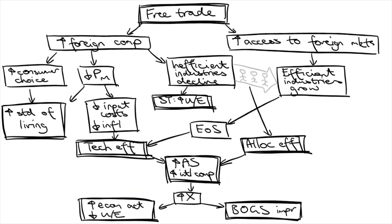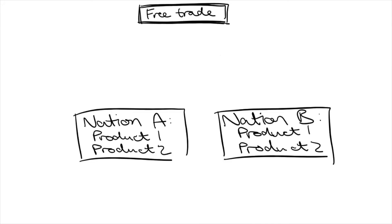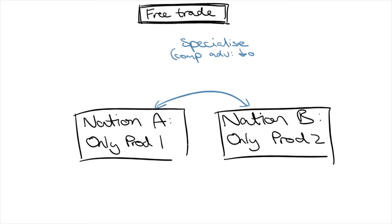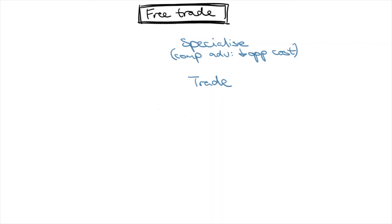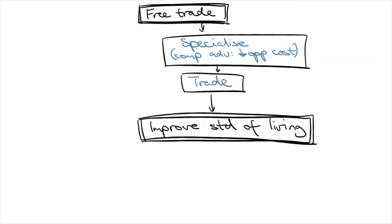And these are just the benefits from a single nation's perspective. From a global perspective, free trade means that instead of each nation having to produce everything to meet their own needs, they can each focus on just a few things that they're good at and then trade. This allows every nation to specialize in producing the goods where they have a comparative advantage, which is where they have the lowest opportunity cost. And from a global perspective, this is efficient resource use, leading to improved standards of living for all as a result of free trade.